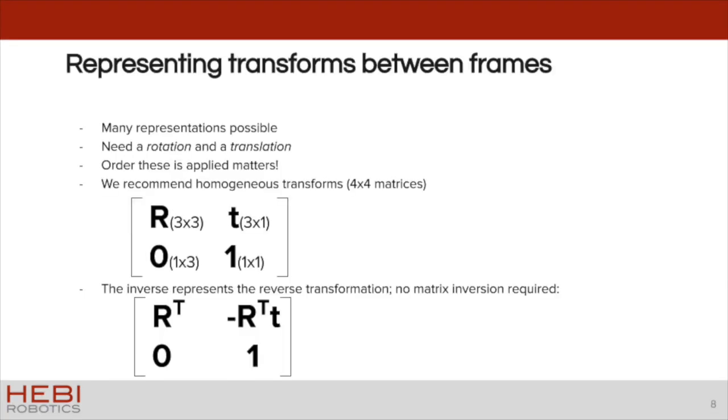Now, to represent these transformations between frames, there are many possible representations. The ones that we have found are very general and useful are called homogeneous transforms. These are effectively 4x4 matrices, where the top left corner, the top 3x3 matrix, is a rotation matrix, and then there are the translation component up at the top right, so you have your x, y, and z translation.